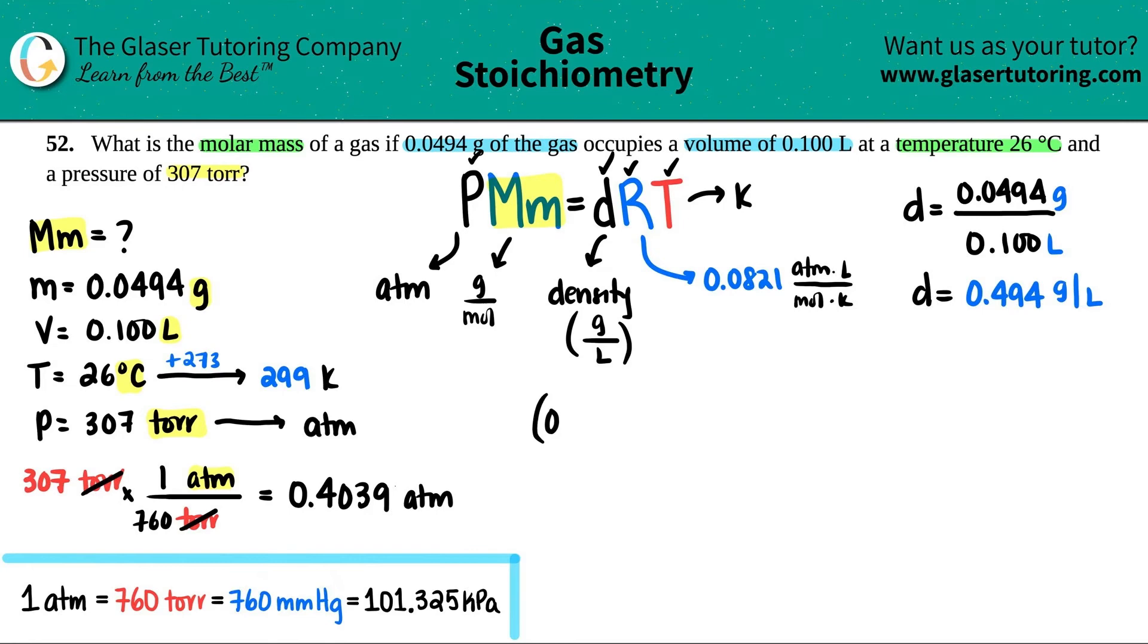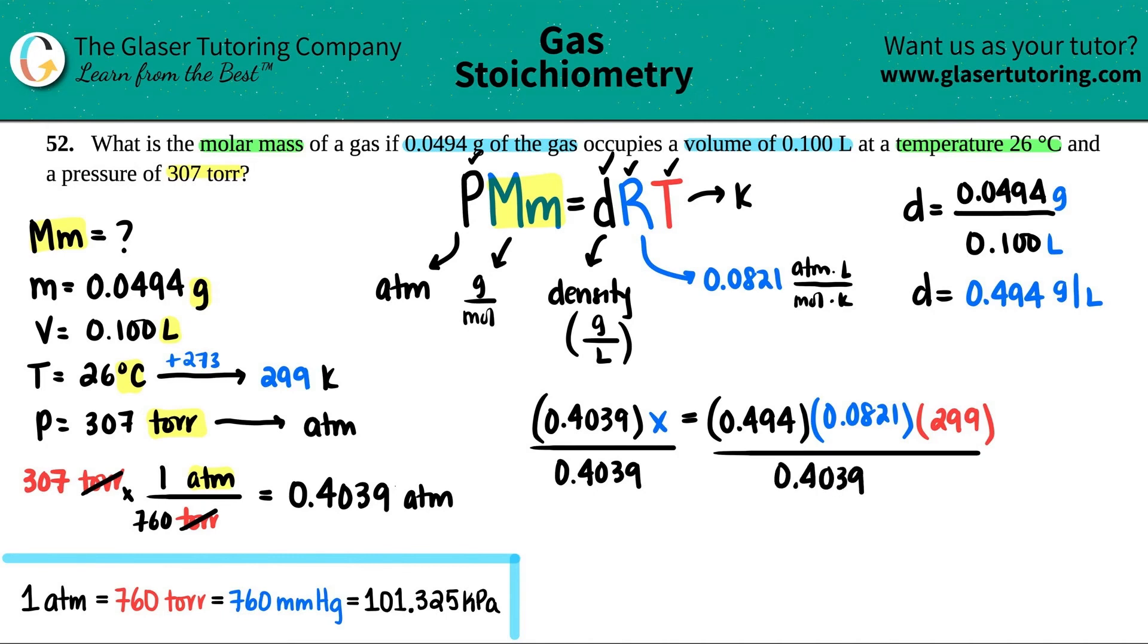So let's go. P 0.4039 times X equals X molar mass. You could put MM, doesn't really matter. Equals the density. We just found that out of 0.494. The R value is 0.0821. And then the temp in Kelvin was 299. Okay. So I'm going to divide by 0.4039 on both sides to get X by itself.